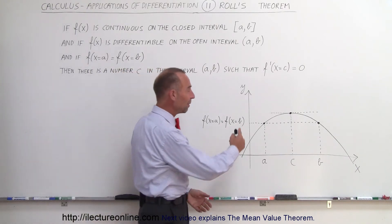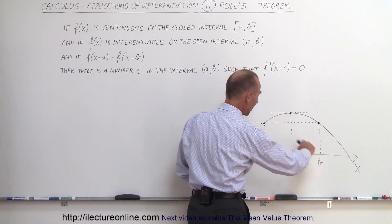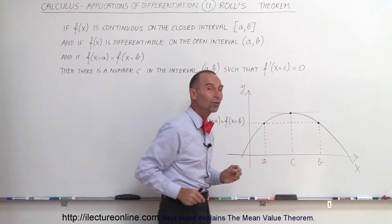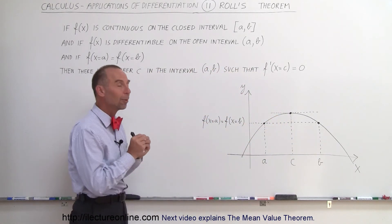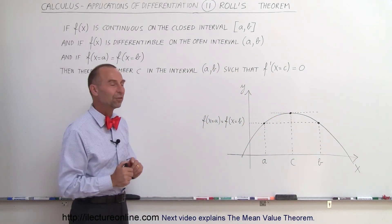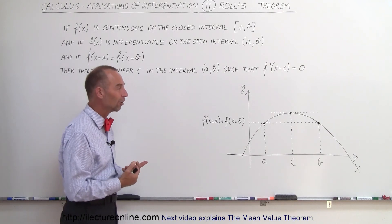And that makes sense. It doesn't matter how you draw the function - you can come down, you can come up, you can make it a straight line - somewhere between those points a and b, there's got to be some point on the function where the derivative is zero, where the slope is zero.